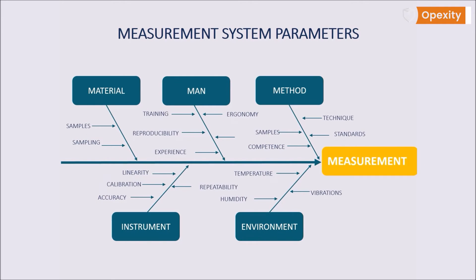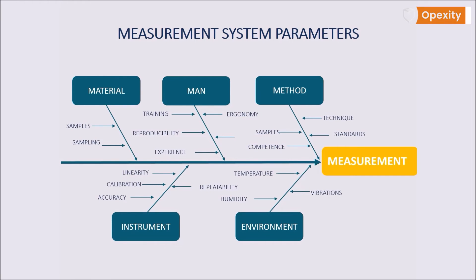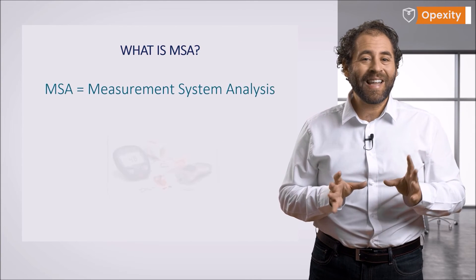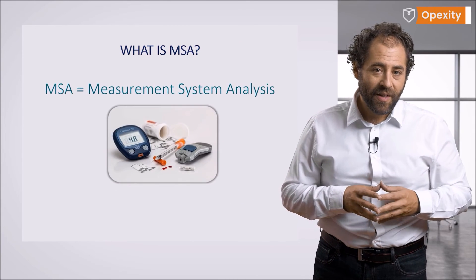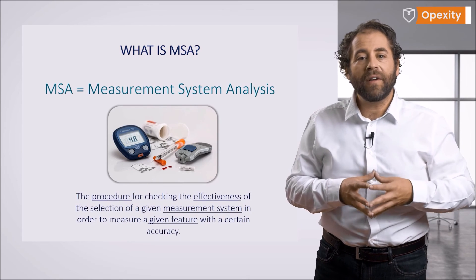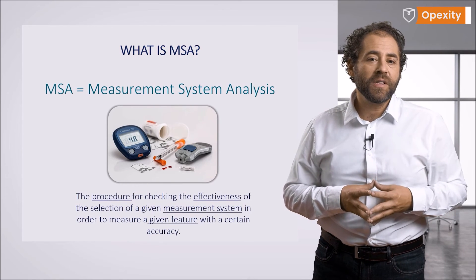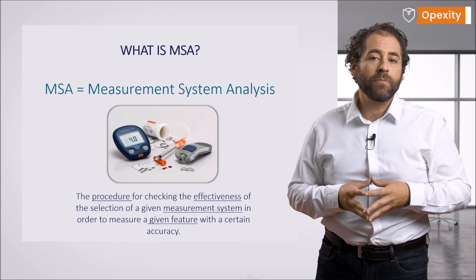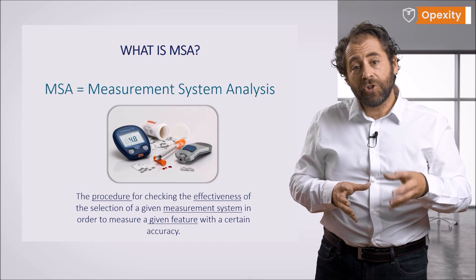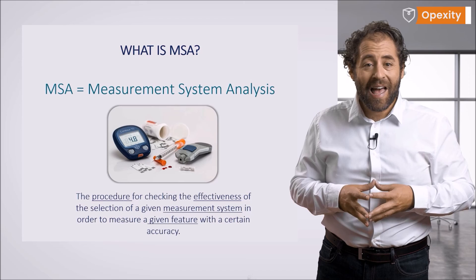machine, environment, measurement. There are many factors affecting the measurement system. To sum up, MSA stands for Measurement System Analysis, and the analysis itself is the procedure to be followed to check the effectiveness of the selection of a given measurement system in order to measure a certain feature with a certain accuracy.